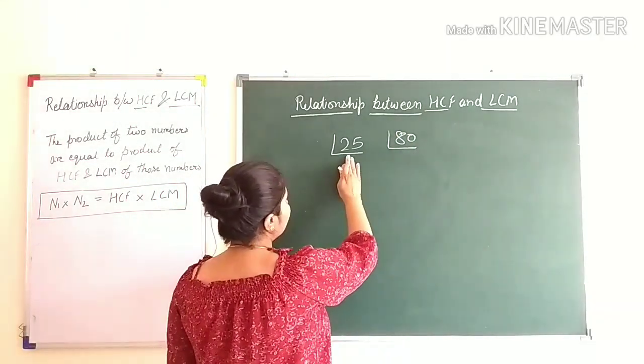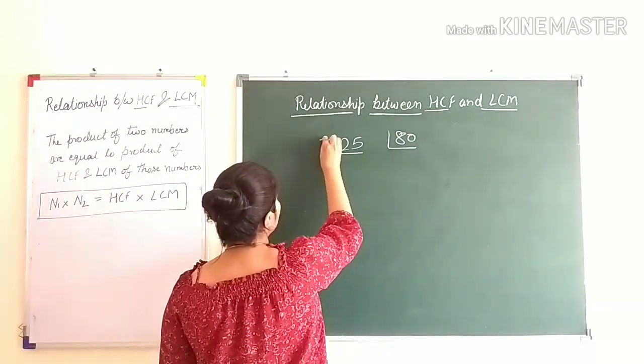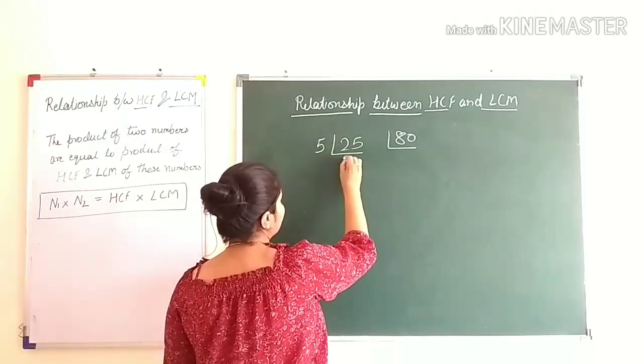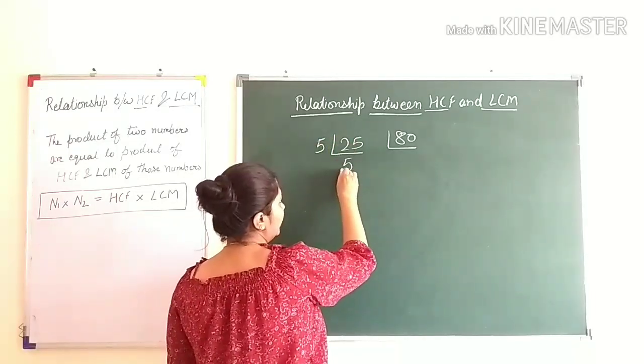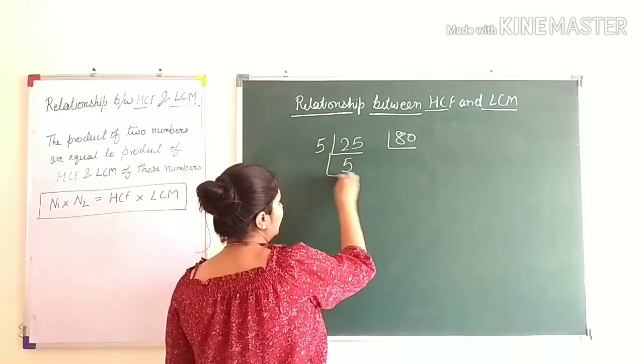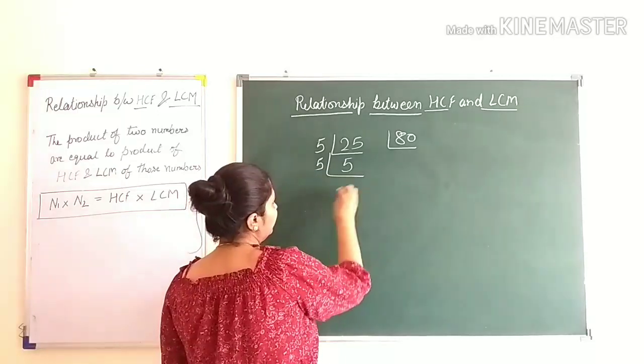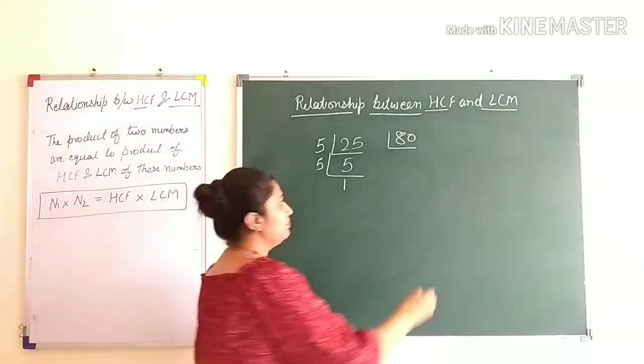25 is divisible by 5. So, 5 fives are 25. Again, this 5 is divisible by 5: 5 ones are 5.